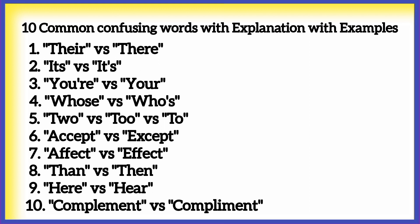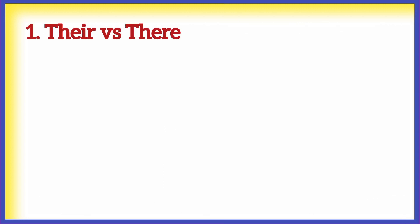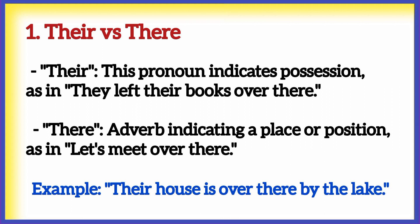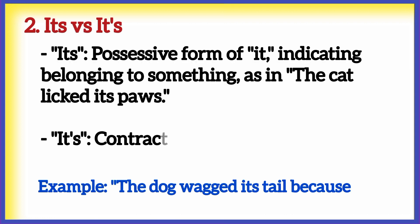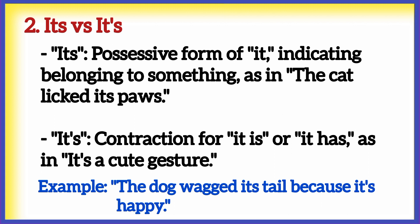Here are 10 common confusing words with explanations and examples that all English learners could benefit from. Number one: there versus there. 'Their' is a pronoun indicating possession, as in 'they left their books over there,' while 'there' is an adverb indicating a place or position, as in 'let's meet over there.' Example: 'Their house is over there by the lake.'